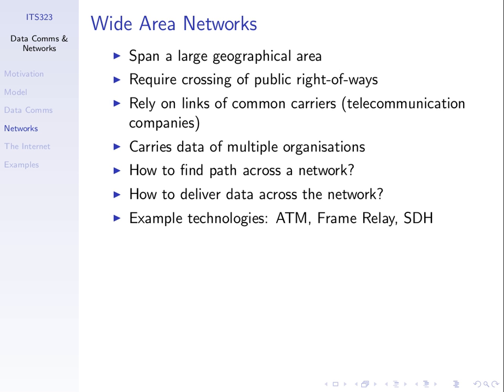Some questions we'll cover after the midterm: how do we find the best way through a network? I can go from my computer to one in the US via the Pacific or via Europe — there are many different paths, which one's best? How do we get the data across that network? Some technologies used in wide area networks include Asynchronous Transfer Mode (ATM), Frame Relay, and SDH. A WAN is a telecommunications company's network, built across cities, rented to others.